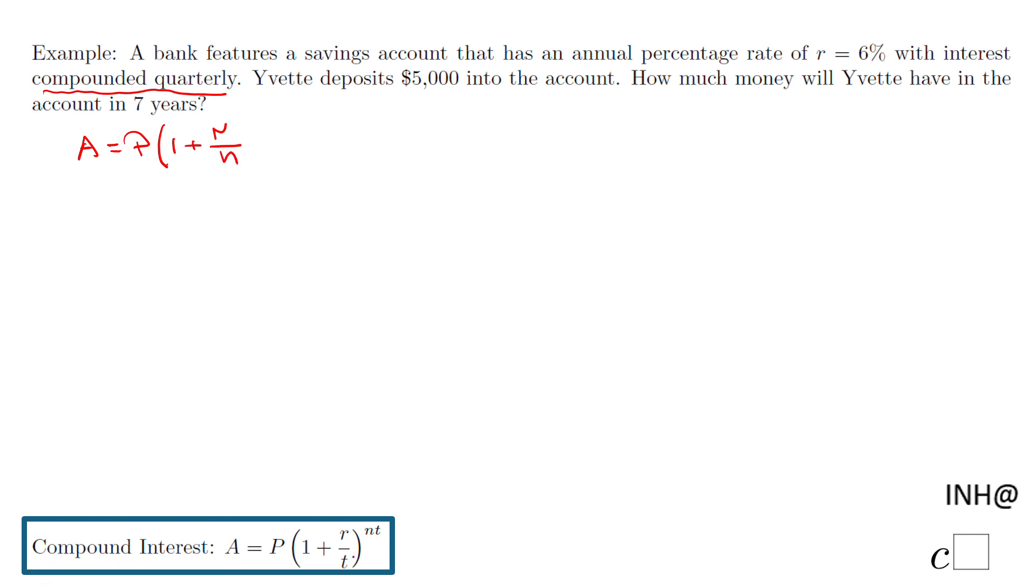To the power of nt. So in our case, P, like I said, is the principal, which in our case is $5,000. R is the rate, but you need to be very careful. This rate should be in a decimal form, so this would be 0.06.